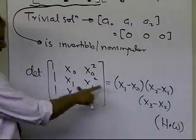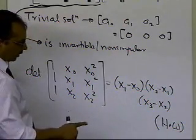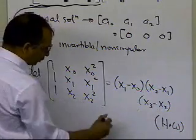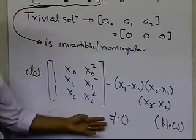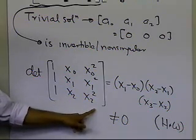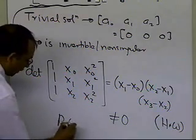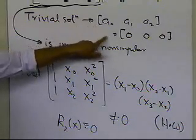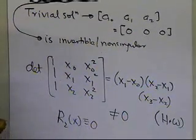The determinant turns out to be (x1 − x0)(x2 − x1)(x3 − x2). Since x1 ≠ x0, x2 ≠ x1, and x3 ≠ x2 — because you cannot have two identical x values in interpolation — this determinant is not equal to zero. When the determinant of a coefficient matrix is not zero, it proves the matrix is non-singular or invertible. Therefore, R2 of x is identically equal to zero, because a0, a1, and a2 must all be zero.